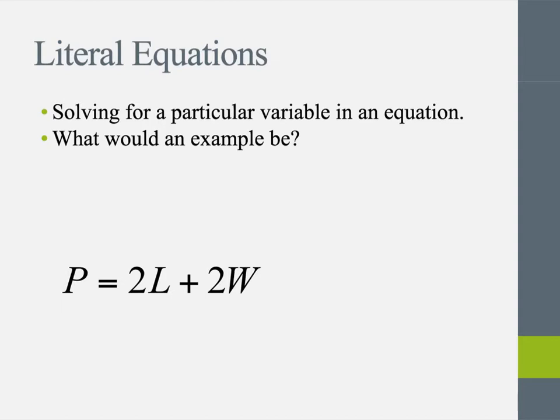So right here we have P equals 2L plus 2W. Now, anybody know what this formula is used for? That's very good. It is for perimeter. 2 times your length plus 2 times your width gives you your perimeter.